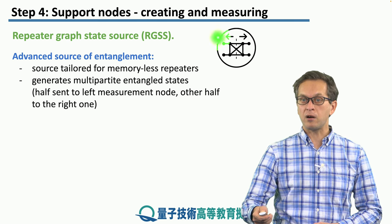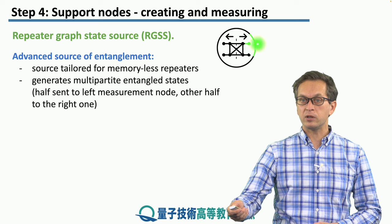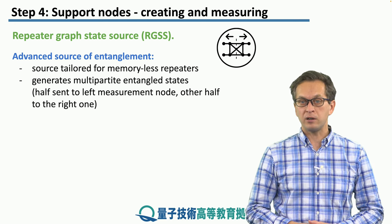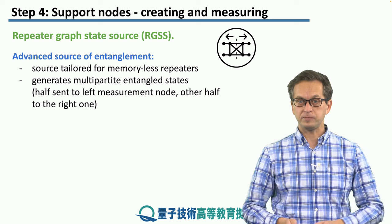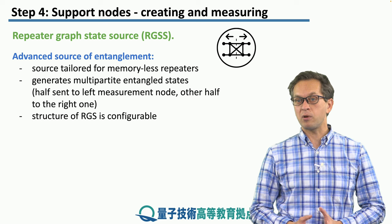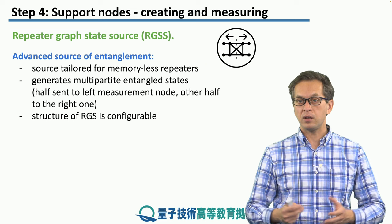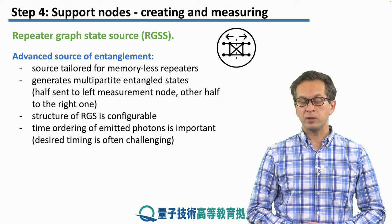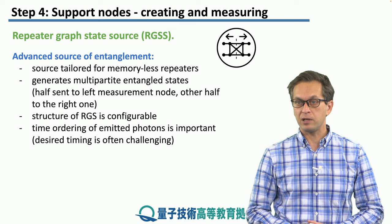The inner qubits are all connected and entangled together, and each inner qubit has an outer arm qubit connected to it. Half of the RGS is sent to the node to the right, and the other half to the node to the left. The structure of this RGS is also configurable — we are not limited to eight qubits as shown in the icon, but can use any number of qubits we choose.